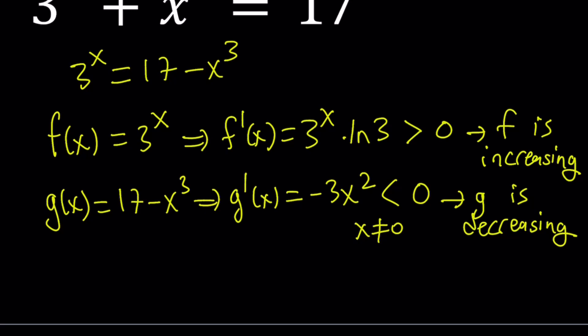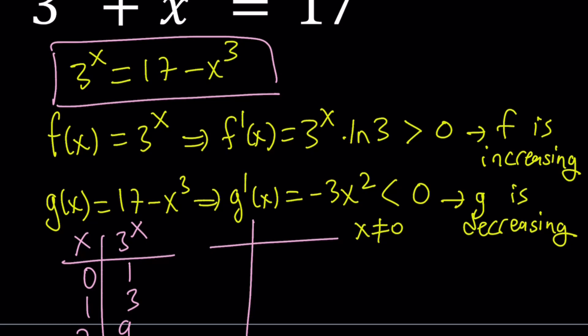Well, here's the thing. If you consider this equation and look at those two functions, we can kind of make a table of values too. For example, you can make x and 3 to the x. For x equals 0, this is 1. For x equals 1, this is 3. For 2, this is 9. For 3, this is 27. And you can kind of make a similar table for the other one, which is 17 minus x cubed.